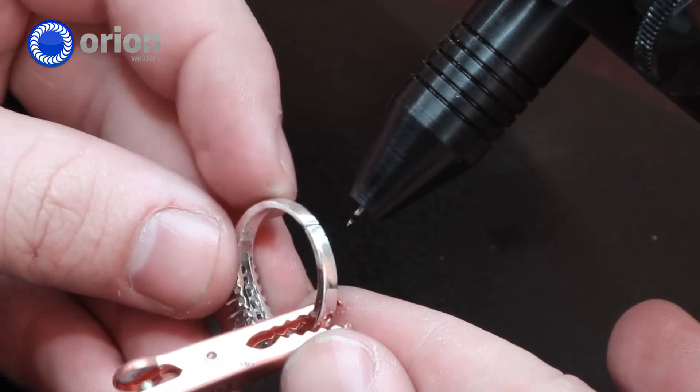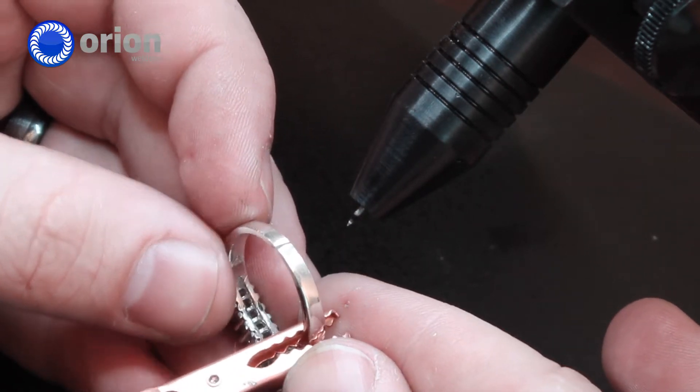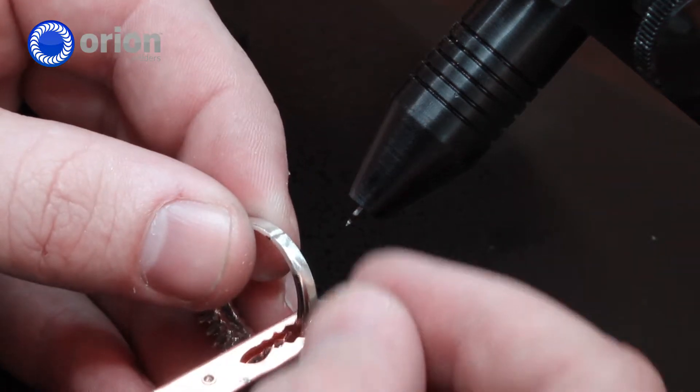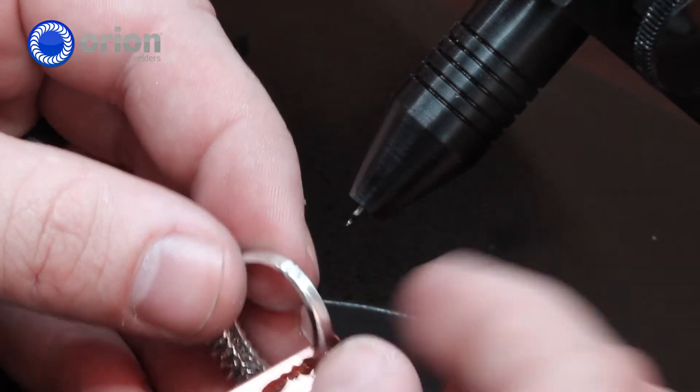So I have a sterling silver ring here that I'm going to demonstrate a resize. I've just cut it with my saw and then you can either lengthen it, put a spacer in it, or you can cut more material out to make it smaller.